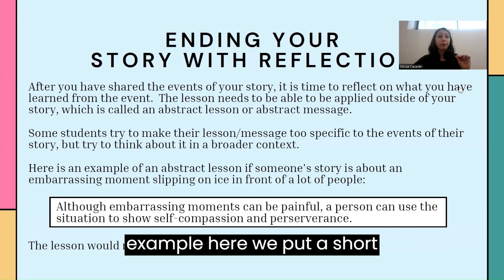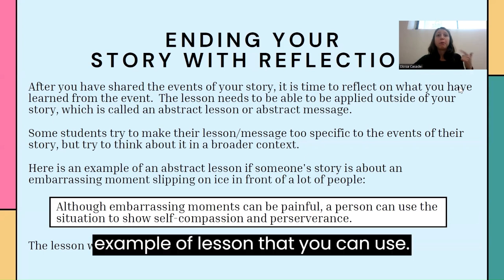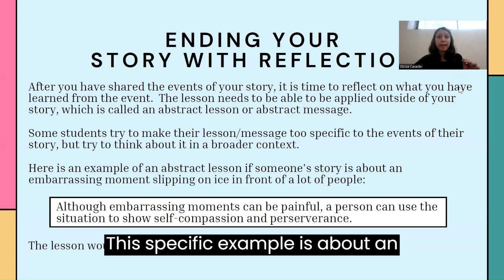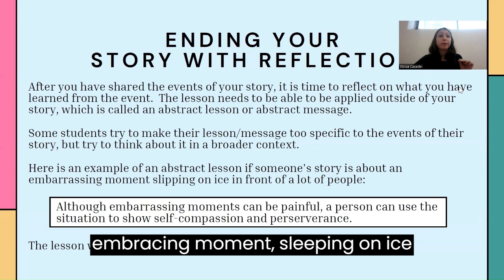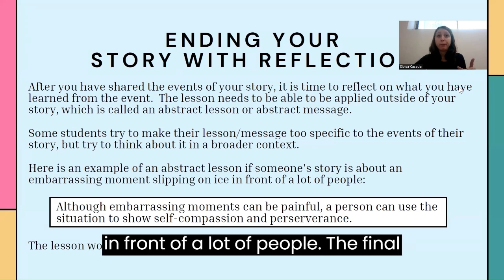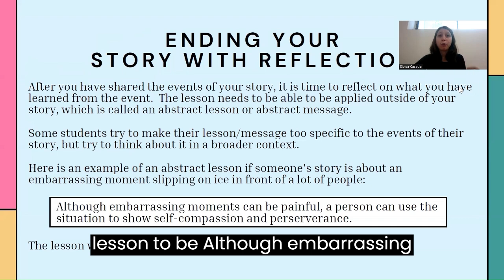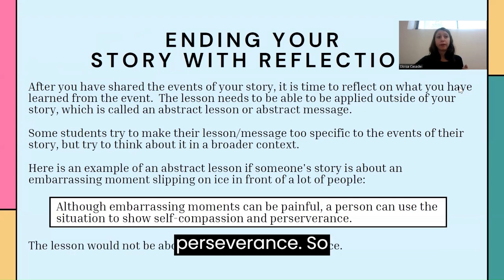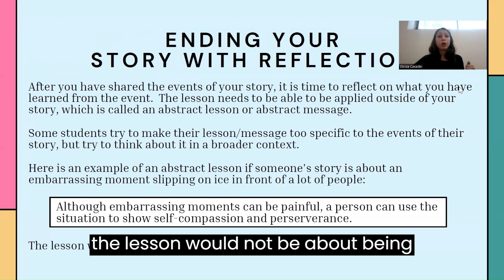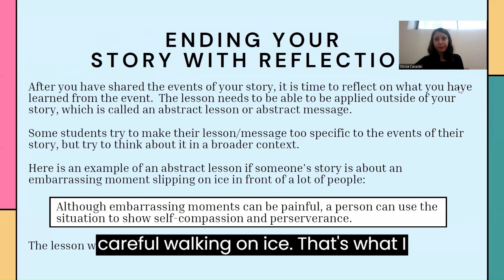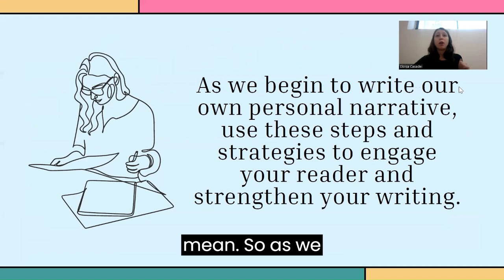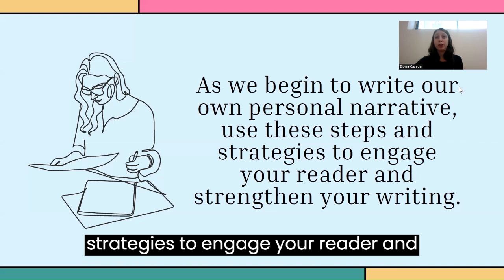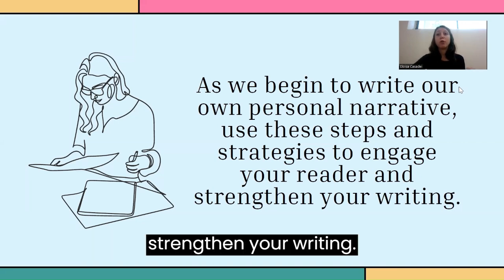For example, consider a story about an embarrassing moment — slipping on ice in front of a lot of people. The final abstract lesson would be: although embarrassing moments can be painful, a person can use the situation to show self-compassion and perseverance. The lesson would not be simply 'be careful walking on ice.' Use these steps and strategies to engage your reader and strengthen your writing.